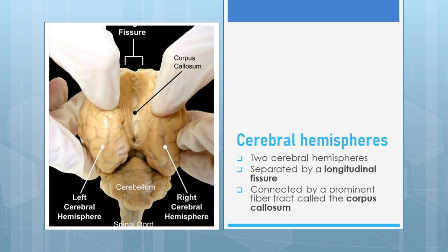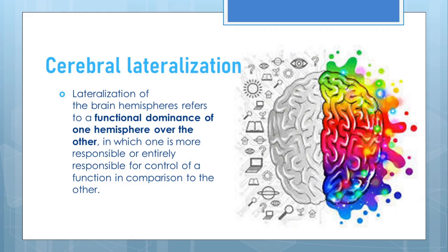The macrostructure of the two hemispheres appears to be almost identical, but there occurs a difference in the composition of neural networks and hence a difference in functional specialization in each hemisphere. The left hemisphere is functionally different from the right hemisphere, and this results in the development of cerebral lateralization.